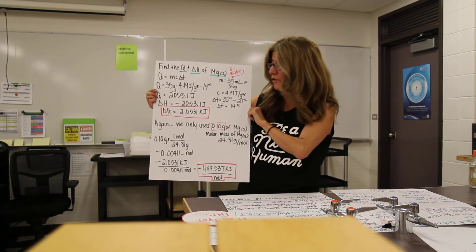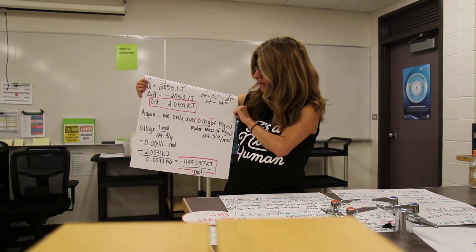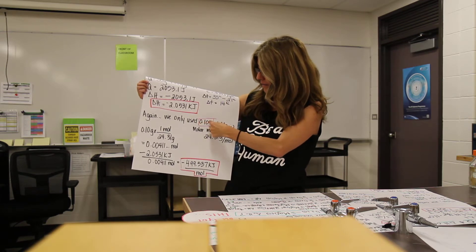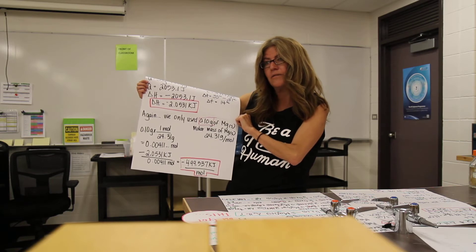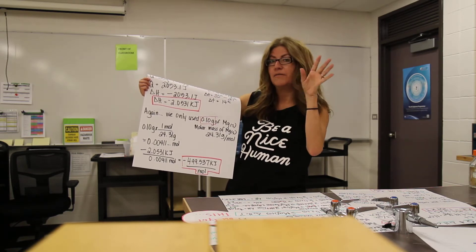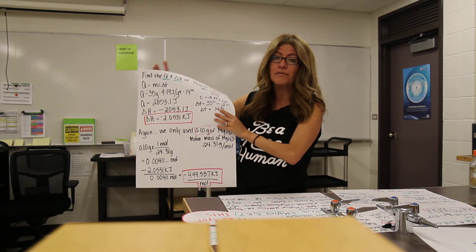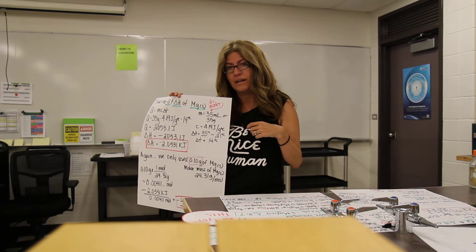We're going to change the joules to kilojoules just to make life a lot easier for us. So we have negative 2.053 kilojoules. Now here's the thing, kiddos, we only use 0.1 grams of magnesium. So we have to actually find the molar enthalpy of this, and then life is going to be a lot easier, because we have to account for the fact that we use 0.1 grams of the magnesium strip.